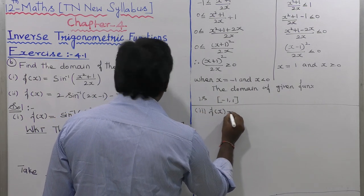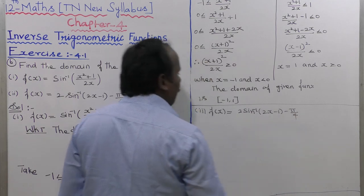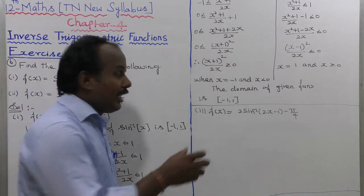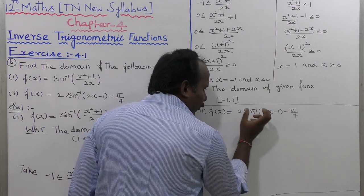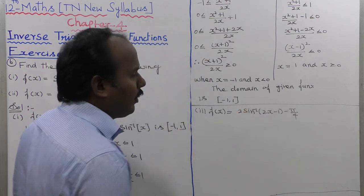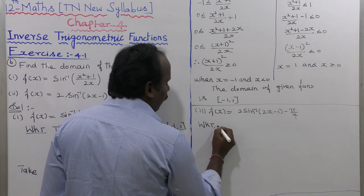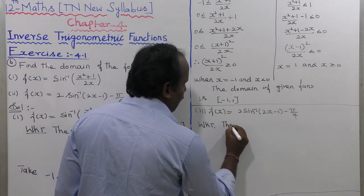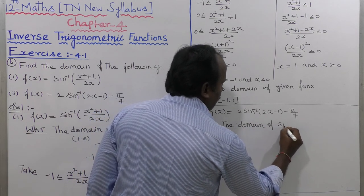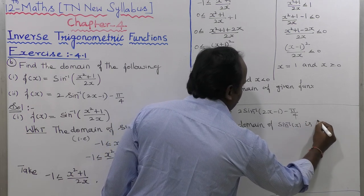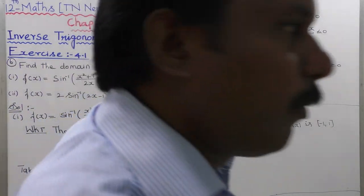For the second subdivision: f of x is equal to 2 times sin inverse of (2x minus 1) minus 5 by 4. To find the domain, we only consider the argument of sin inverse, which is 2x minus 1. We know that the domain of sin inverse of x is the closed interval minus 1 to plus 1.